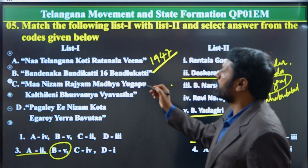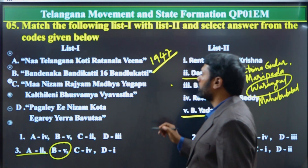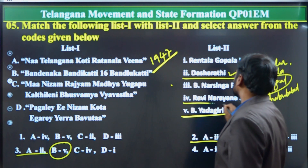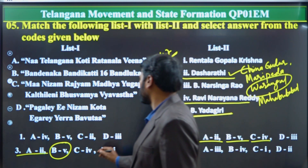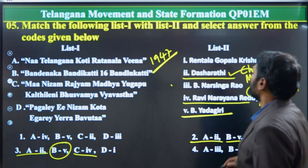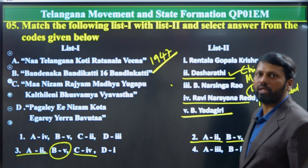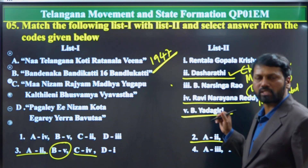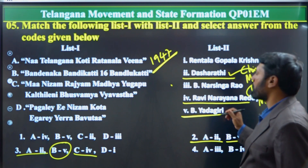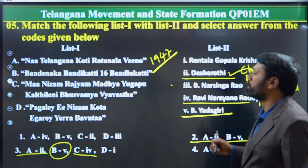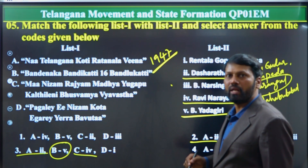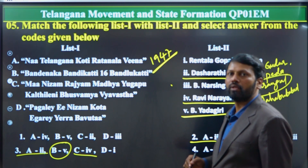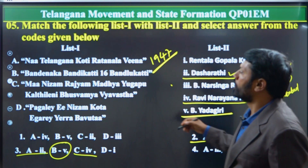C — the next item was said by Ravi Narayan Reddy — so C matches 4. Ravi Narayan Reddy was a great communist leader and one of the important leaders of the Telangana armed struggle, which occurred between 1946 and 1951. He compared the Nizam state of Hyderabad with the Middle Ages, when land was controlled by feudal lords.